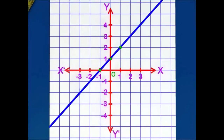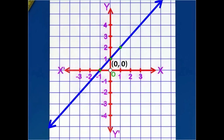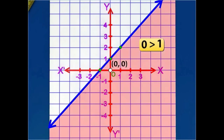This line divides the plane into two regions. Now consider a point, say (0, 0), in one of the regions and substitute it in the given inequation. This region does not represent the given inequation.